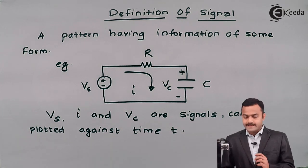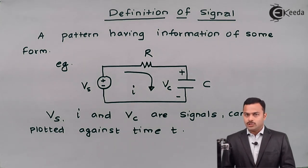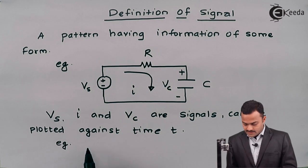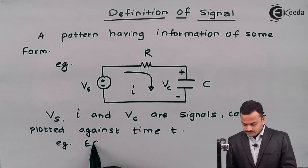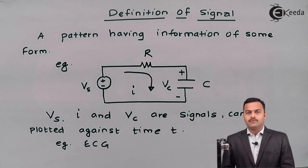So here we have taken an example of electrical system. It is not necessary that signal can only be represented in electrical system. It could be in a biological system or any other physical system as well. For example, electrocardiogram ECG is once again a plot of our heart beat against some parameter or you can say time T. So that can also be a signal. So in a biological system, I can consider ECG as an example of a signal.